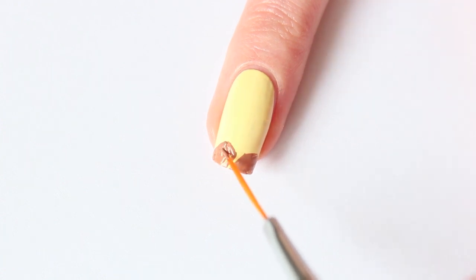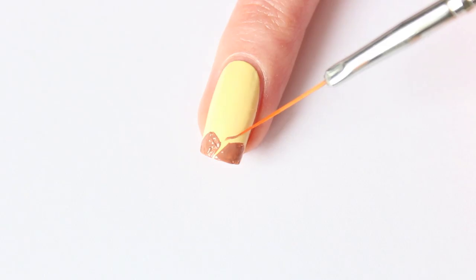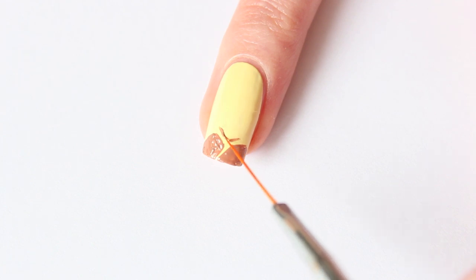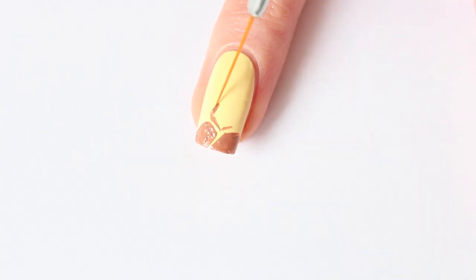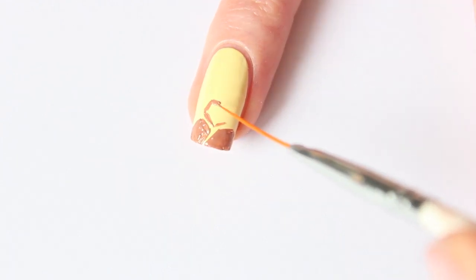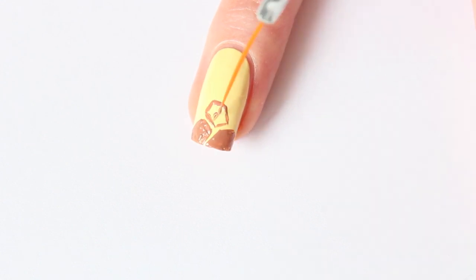Don't worry if it's not perfectly even, the top coat will fix that. I'm making the giraffe print medium sized but if you want you can make the spots smaller.